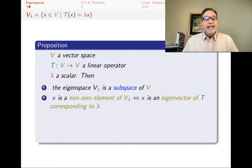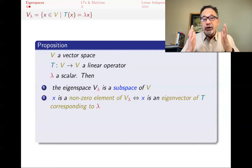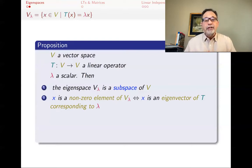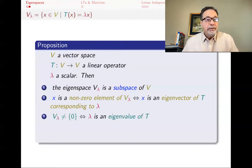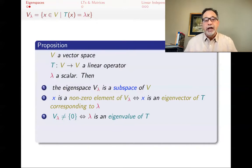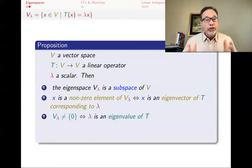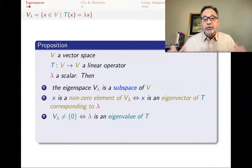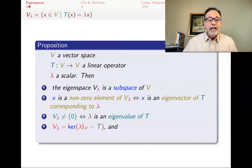That is why we include zero in the eigenspace — zero is not an eigenvector, but it is the extra element that makes V lambda a subspace. All non-zero elements of V lambda are exactly the eigenvectors of T corresponding to lambda. If V lambda is just the zero subspace, then lambda is not an eigenvalue. But if there are any non-zero vectors in V lambda, they are eigenvectors of T corresponding to lambda. So V lambda tells you whether lambda is an eigenvalue and gives a sense of how large the collection of corresponding eigenvectors is.